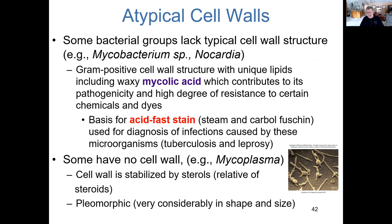Some bacteria have no conventional cell wall at all — lacking peptidoglycan. The genus Mycoplasma has a cell wall rich in sterols, which are lipids. This gives these very tiny cells a pleomorphic characteristic — meaning they take on many shapes and sizes — due to their atypical cell wall.